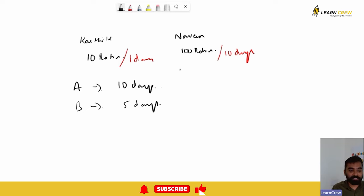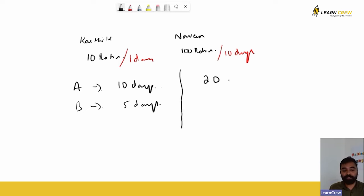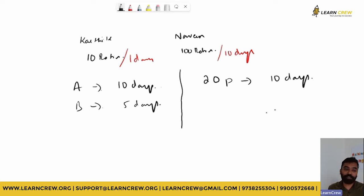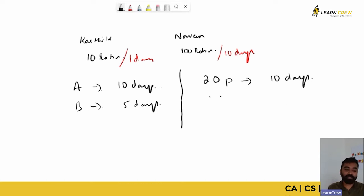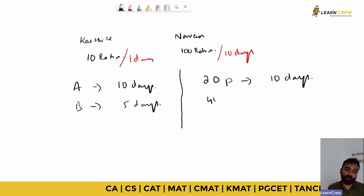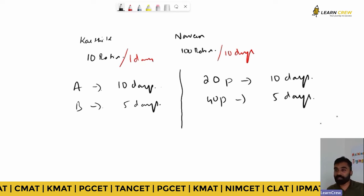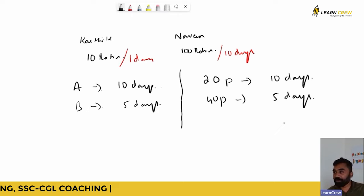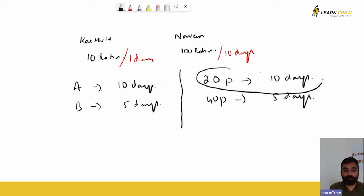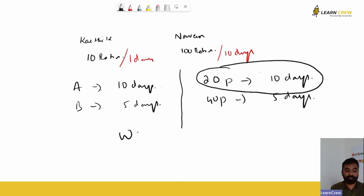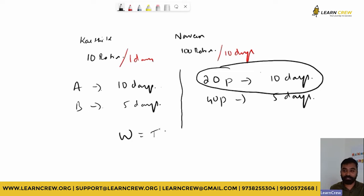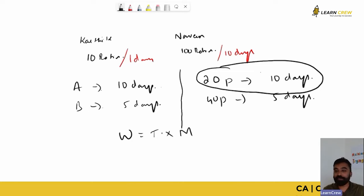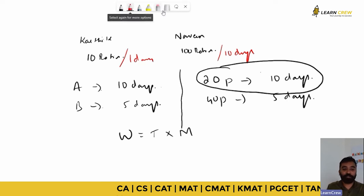If 20 people work for 10 days to complete a work, and then 40 people work for 5 days to complete the same work — more people means fewer days required. So the work done is equivalent, and it is dependent on the number of people and the time taken.